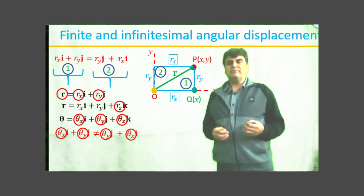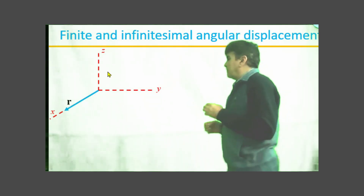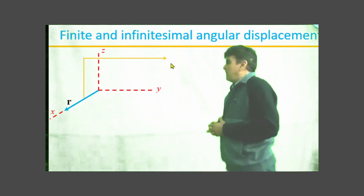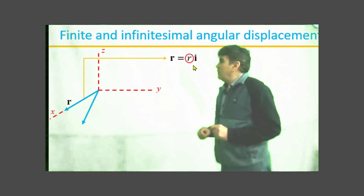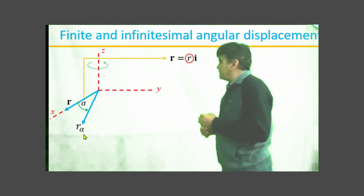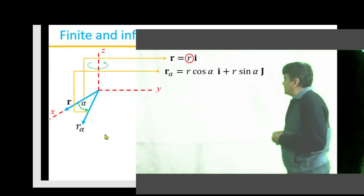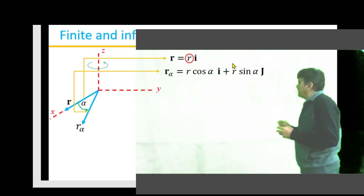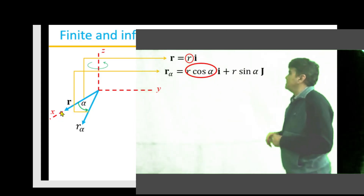To provide a rigorous mathematical proof, I consider a three-dimensional coordinate system with x, y, and z axes, and a vector r initially pointing exactly along the x-axis, mathematically expressed as r = r·i. If I rotate it about the z-axis through an angle alpha, the vector r lies in the xy plane and is represented as r_alpha, where r·cos(alpha) is the component along x and r·sin(alpha) is the component along y. Since r and r_alpha have the same magnitude, |r| = |r_alpha|.